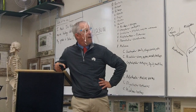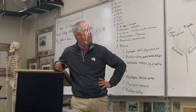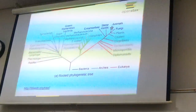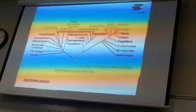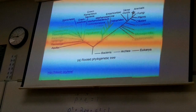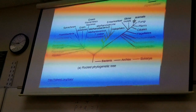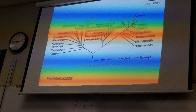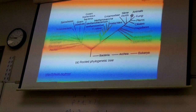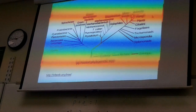Every time you see a branch split, that's a speciation event. This tree isn't all-inclusive — the animal's branch is a whole big tree on its own, with 17 or 19 different phylums. Every one of these lines has its own branches: many types of green filamentous bacteria, halophiles, plants, and so on.